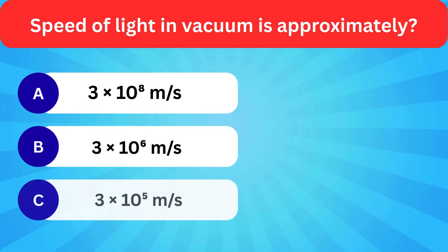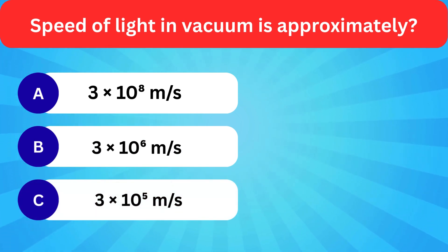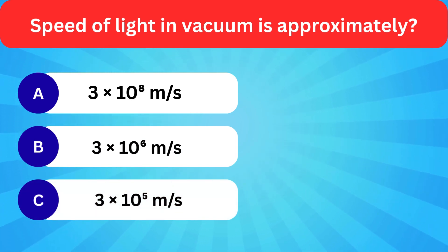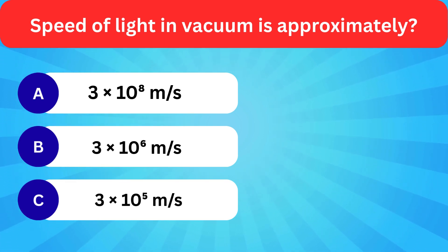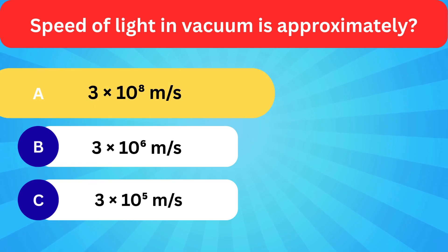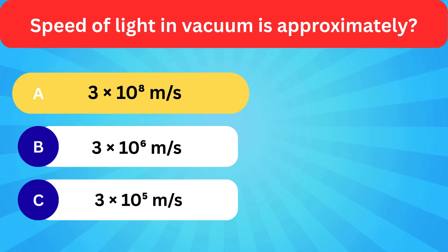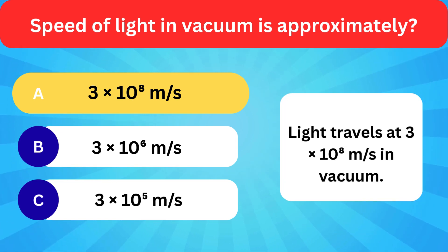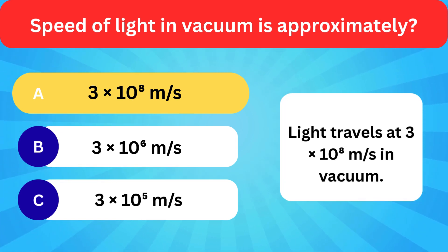Speed of light in vacuum is approximately — options: 3×10⁸ m/s, 3×10⁶ m/s, 3×10⁵ m/s. Correct answer is 3×10⁸ meter per second. Light travels at 3×10⁸ meter per second in vacuum.